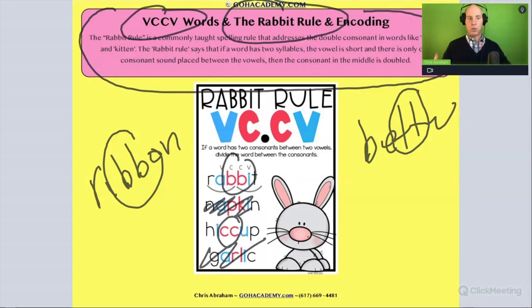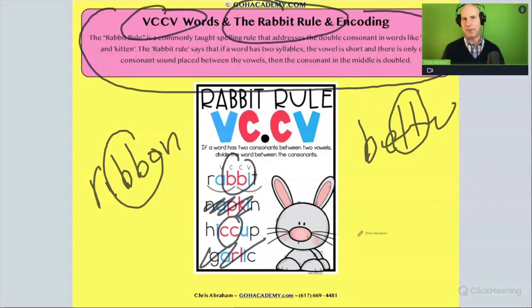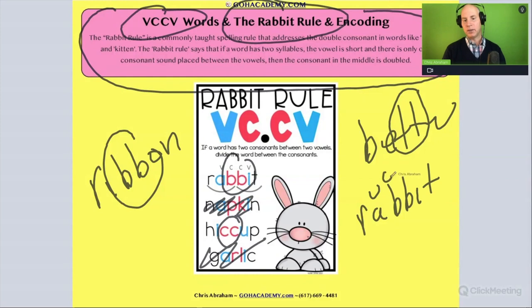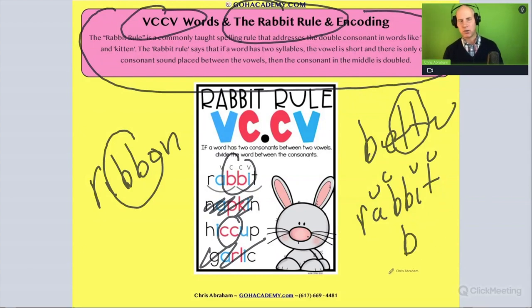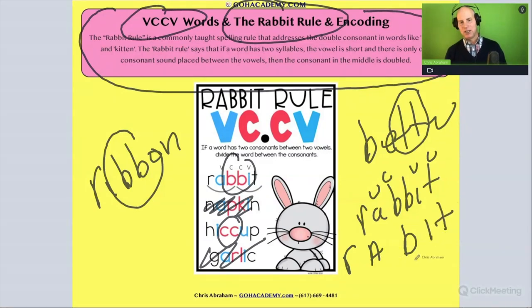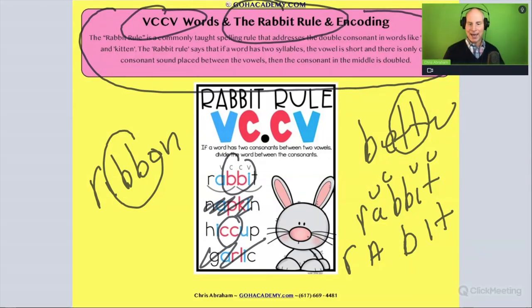When we have a word like rabbit, it has two closed syllables. If we look at 'rabbit,' there's a closed syllable here and a closed syllable here. When we have two closed syllables and the middle of the word is a single consonant — so the sounds of rabbit are R-A-B and I-T — we have two closed syllables: 'rab' and 'it.'